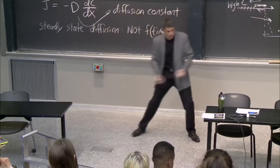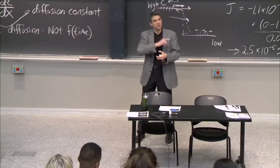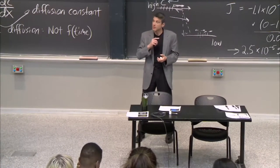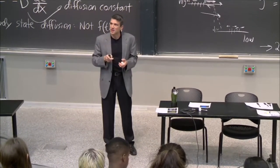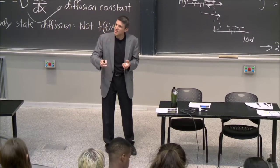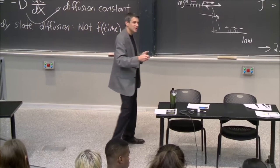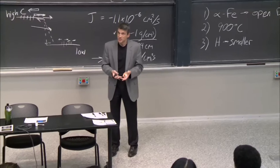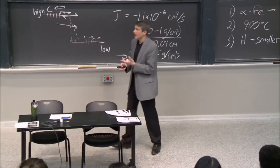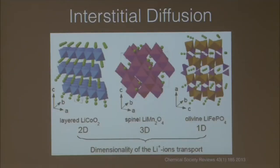And then you can recharge, discharge, recharge — you're just pushing these lithium ions back and forth. You are diffusing them through whatever structure you're putting them into. So if it's the cathode and you're trying to get the lithium to come back in or go back out, then you can imagine that the barriers and the dimensionality itself are crucial.